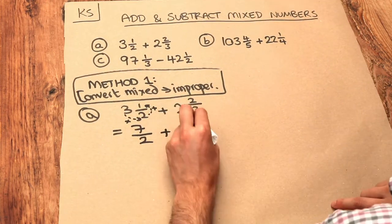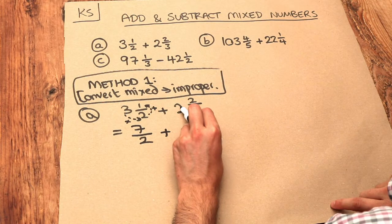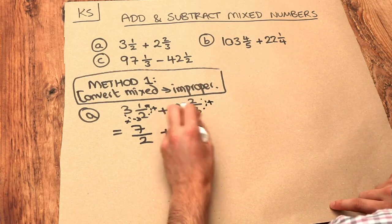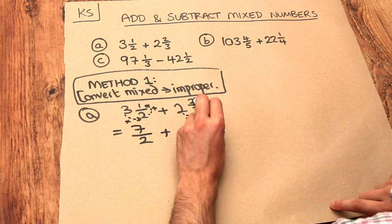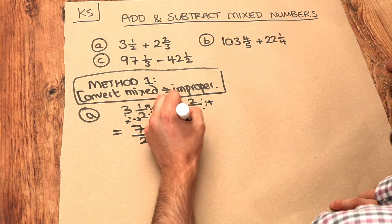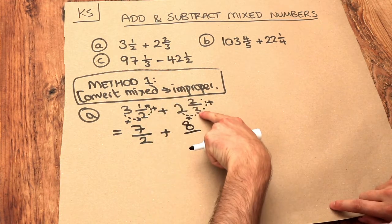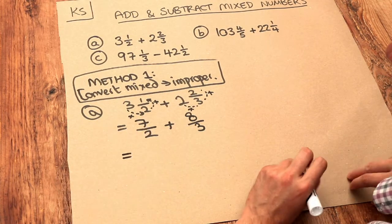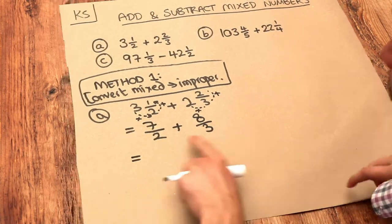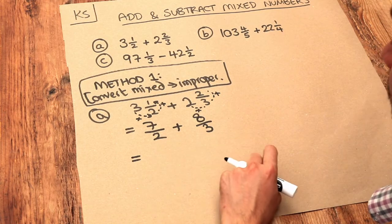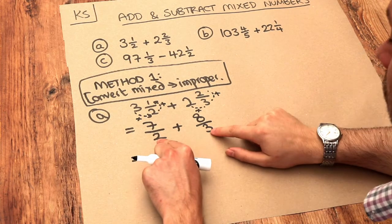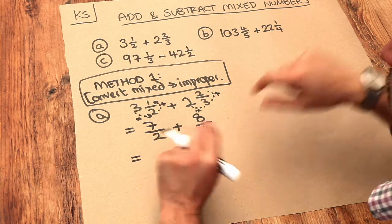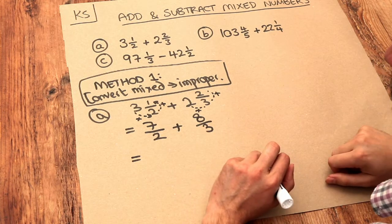Let's do the same for the second fraction. We multiply the two and the three together and add the two. So two times three is six, plus the two is eight, so it's eight over three — we keep the same denominator. Then we do what we usually do to add fractions: we need a consistent denominator, and we ask what do two and three both go into? Well, they both go into six — that's a common multiple.